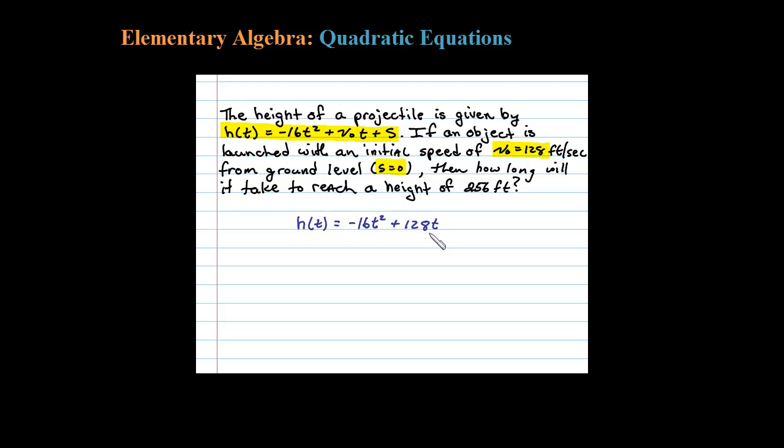Now it says, how long will it take to reach the height of 256 feet? So let's substitute that in for the height. 256 equals negative 16t squared plus 128t, and we need to solve for t. This here is our setup. T is the time it takes to reach that height.